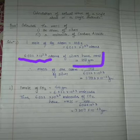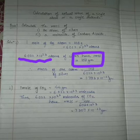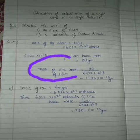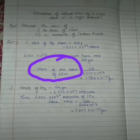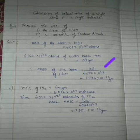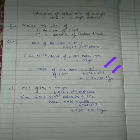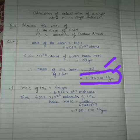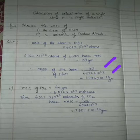Since 6.022 × 10²³ atoms of silver have a mass equal to 108 grams, the mass of one atom of silver will be equal to 108 divided by 6.022 × 10²³. So the answer will be 1.793 × 10⁻²² grams.